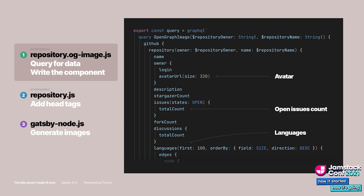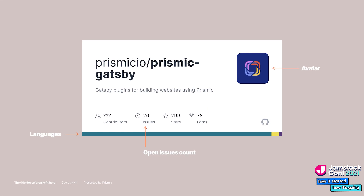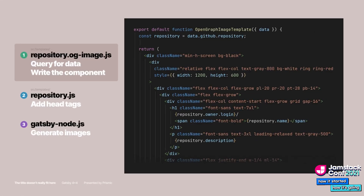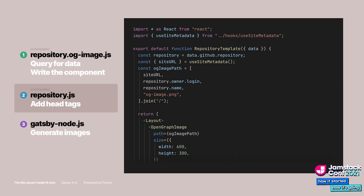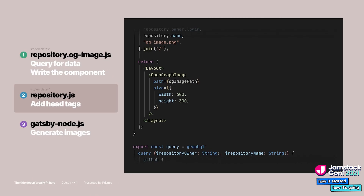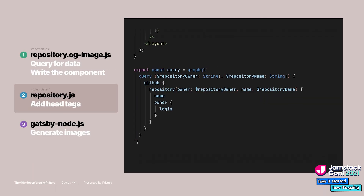Once we have all the data we need, we template it in a React component. As mentioned in the talk title, we're going to use Tailwind to style our card to look like the real one from GitHub. We rely on Tailwind's built-in colors and scales. Let's assume we're done with that and jump into our next step: adding meta tags for our new social image on the repository page template.